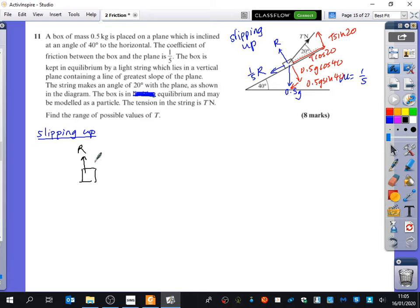Forces going up from the plane, you have r and you have t sin 20. To the right, you have t cos 20. Down, you have 0.5g cos 40. Left, you have 0.5g sin 40 and you also have a fifth r. So we know that it's still in equilibrium. It's in limiting equilibrium. So which should we look at first? Up and down or left and right? We'll look at up and down and we'll find out what r is equal to. And then we can substitute it in there and we can find out what the value of the tension is.